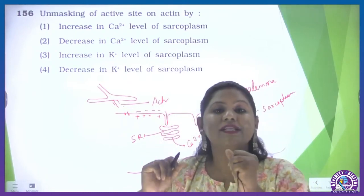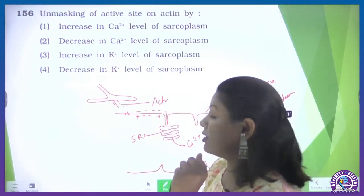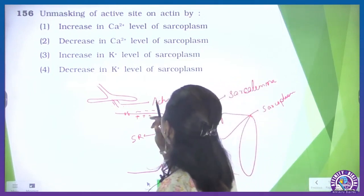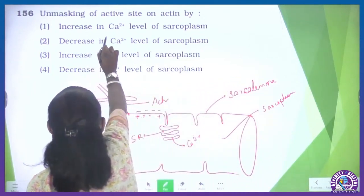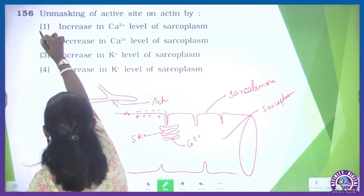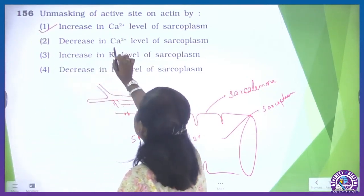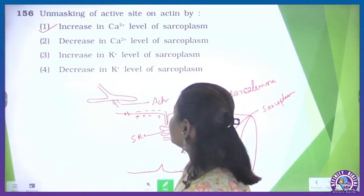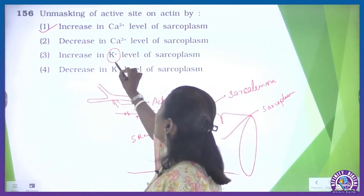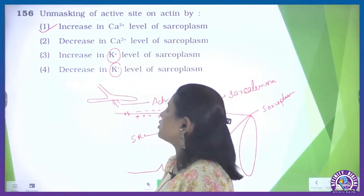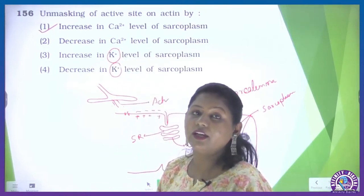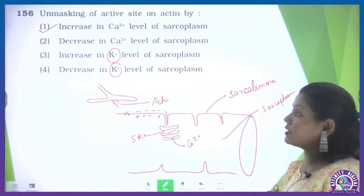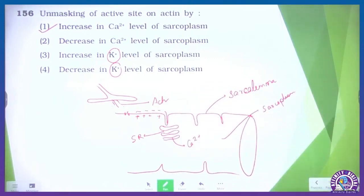This causes the unmasking of the myosin binding site which is present on actin. So what we are looking for is an increase in the calcium level of the sarcoplasm. A decrease in calcium level would not create any sensitivity. Potassium and sodium are not used for the unmasking. So the correct option for question 156 is option number 1.